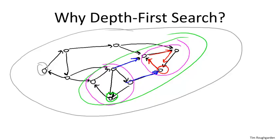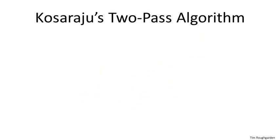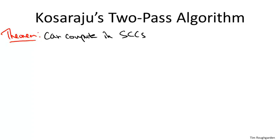The magic of the algorithm we'll discuss next is that in a super slick preprocessing step — which ironically is itself a depth-first search — we can in linear time compute exactly where we want to start subsequent depth-first searches, so that each invocation gets us exactly one strongly connected component and nothing more.